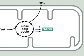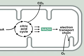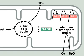NADH funnels energy to the electron transport chain in the inner mitochondrial membrane. This fuels the proton gradient that is then used for the production of ATP, the cell's primary energy currency.